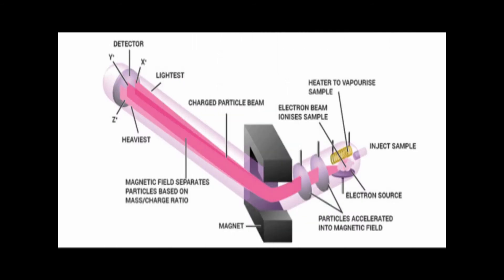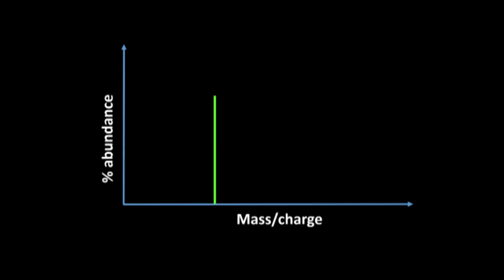In detail: a sample is injected and vaporized, then an electron stream converts the gaseous atoms into positive ions. After the ionization chamber, ions pass through an electric field where speed increases, then through a magnetic field where heavier and lighter ions are separated. The detector produces a small current which is magnified, and we draw a bar chart. For example, three peaks indicate three isotopes. The x-axis shows the mass-to-charge ratio and the y-axis shows abundance.